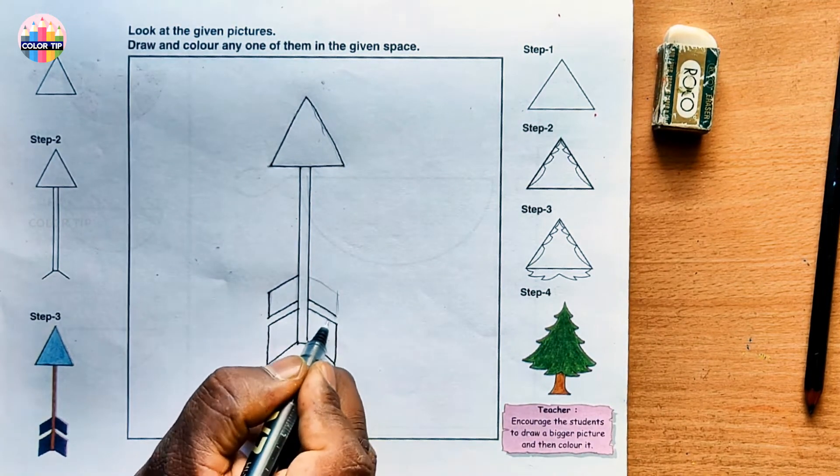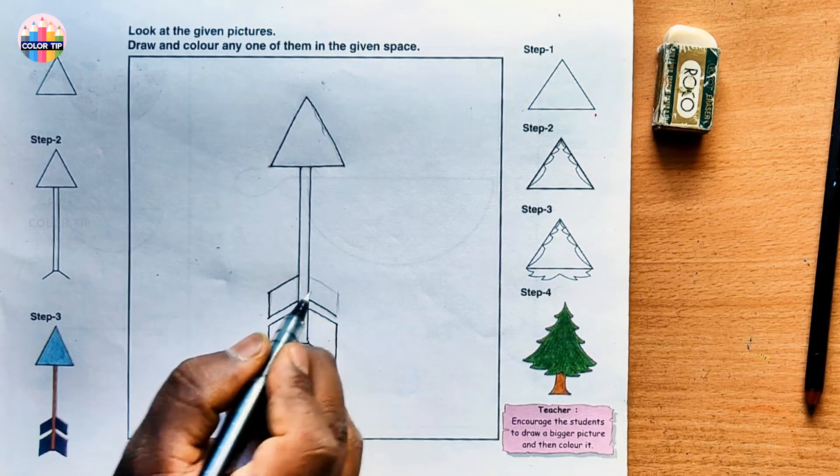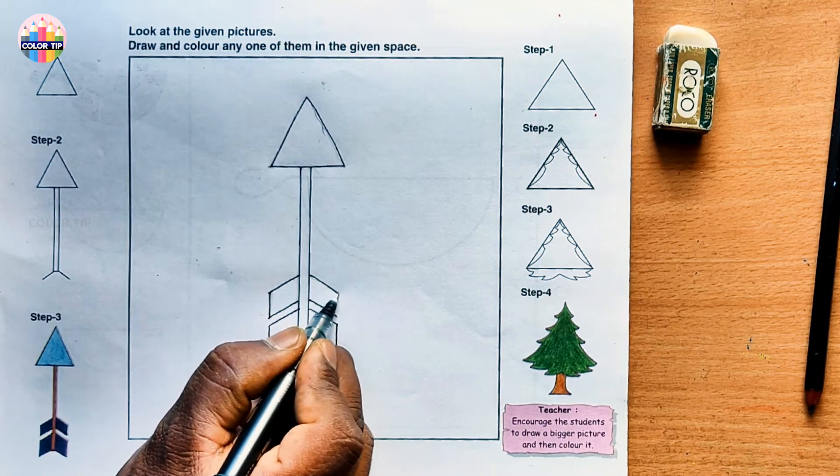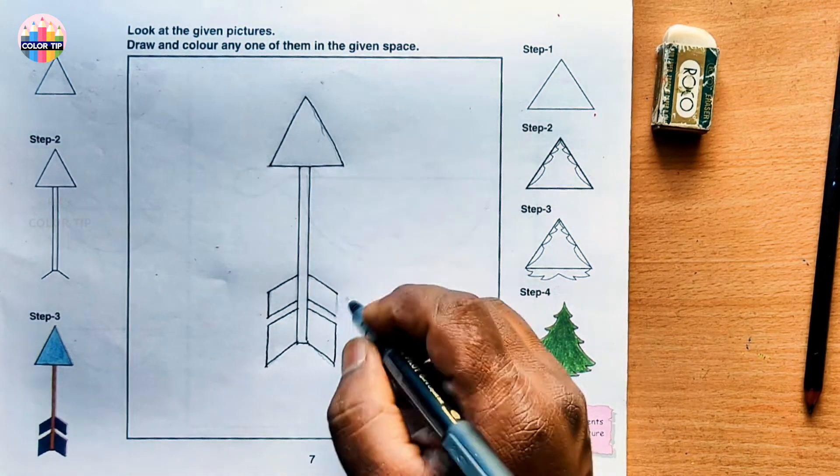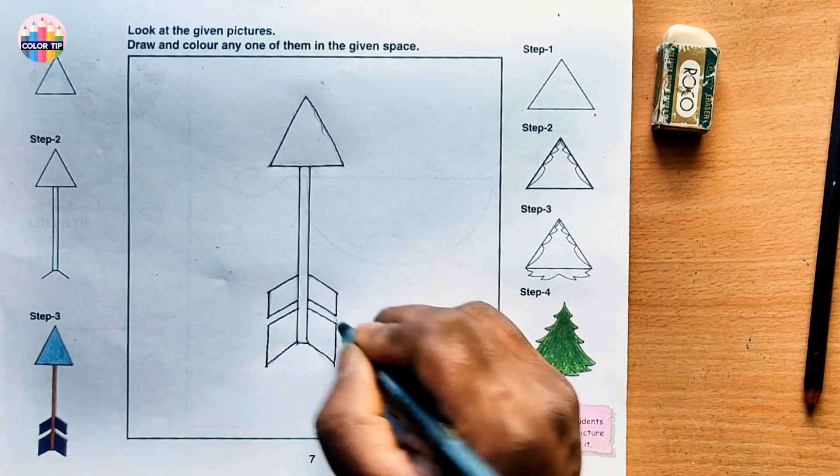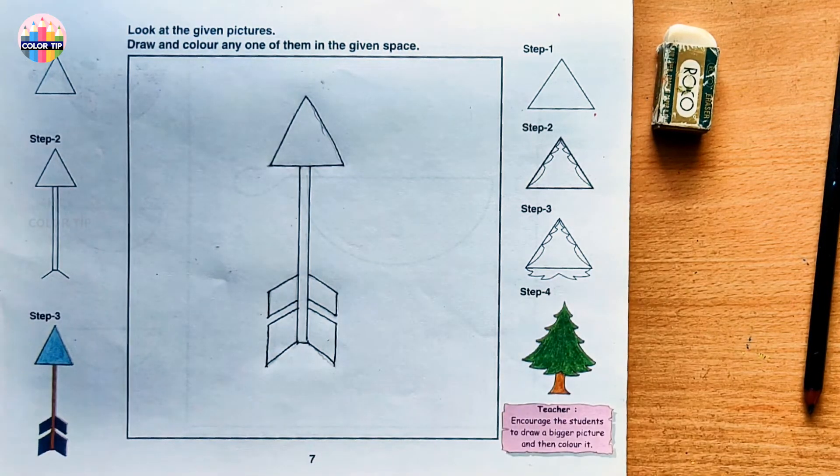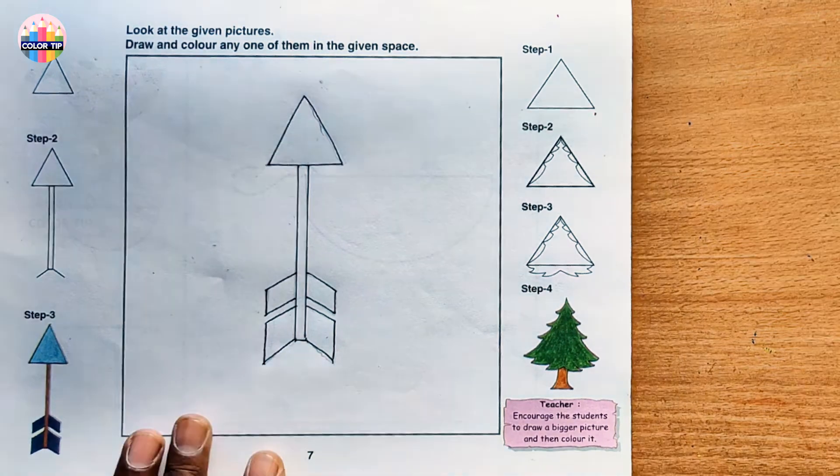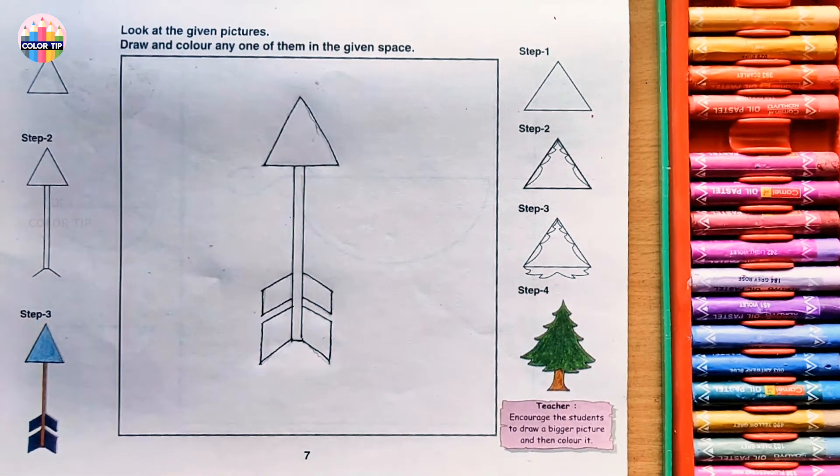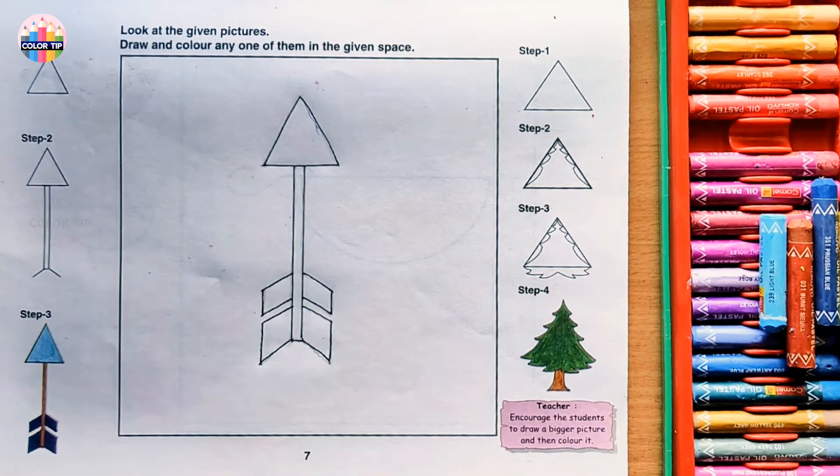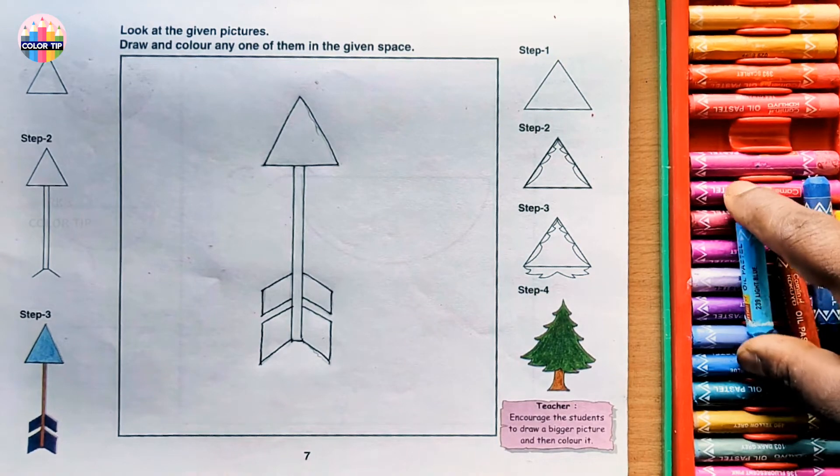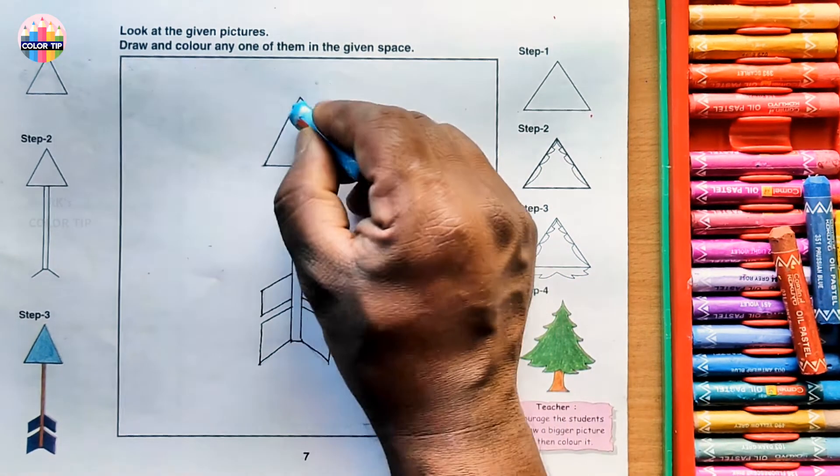Slanting line parallel to this line, little gap. One more line in the same direction, slanting line. Now join it with a standing line. Let us color this now. These are the four colors we are going to use. Light blue, I'm going to color it with light blue.